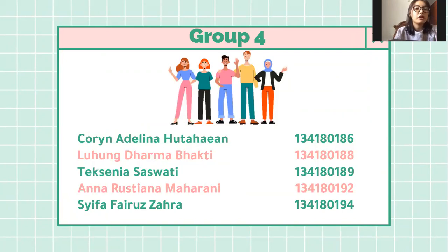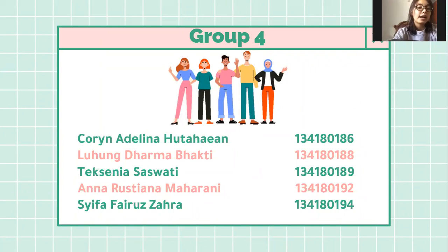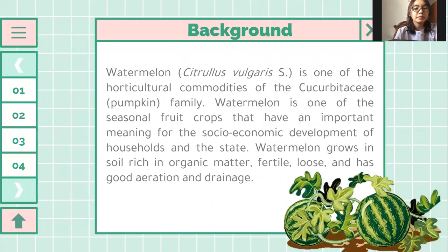First of all, let me introduce the members of group 4. The first one is me, Corinna Delinahutahayan, student number 16186. Luhum Dharma Bhakti, number 188. Deksenia Saswati, number 189. Anna Rustiana Maharani, number 192. And Shiva Fairo Zahra, number 194.